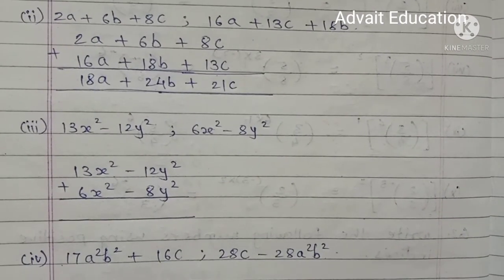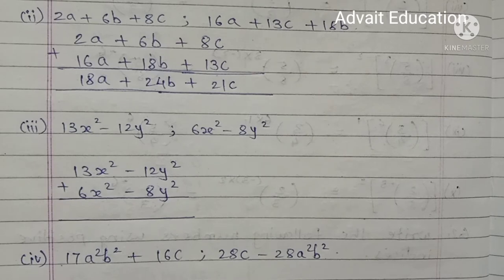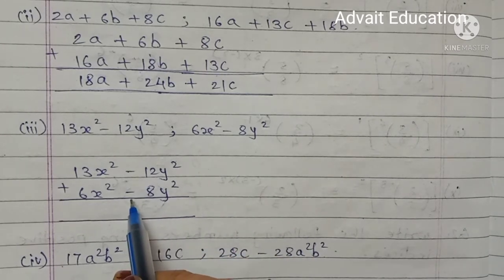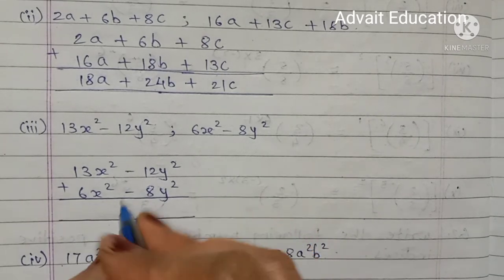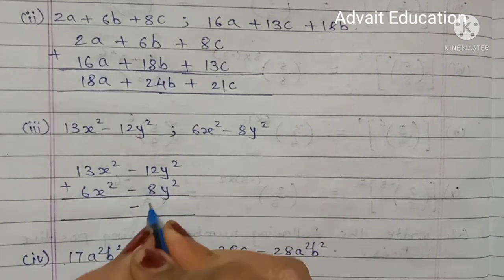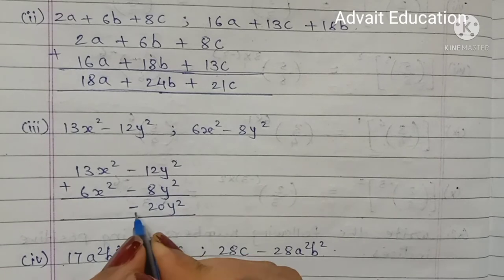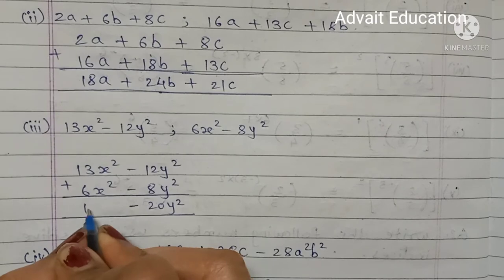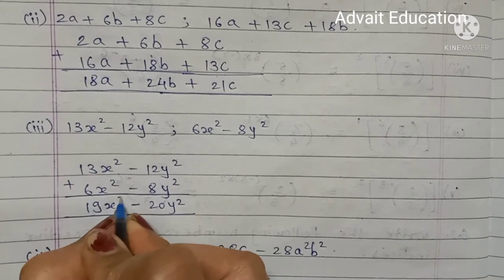Third problem: 13x² minus 12y² plus 6x² minus 8y². Minus minus plus: minus 12y² minus 8y² gives minus 20y² with minus sign. 13x² plus 6x² equals 19x². Answer: 19x² minus 20y².